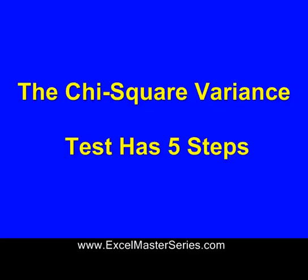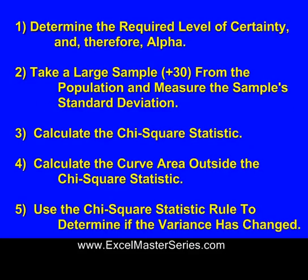The Chi-Square Variance Test has five steps. The first step, you need to determine the required level of certainty and alpha, and that's derived from the problem statement. For example, if you want a 95% level of certainty, then that required level of certainty is 95% and the alpha is 0.05.